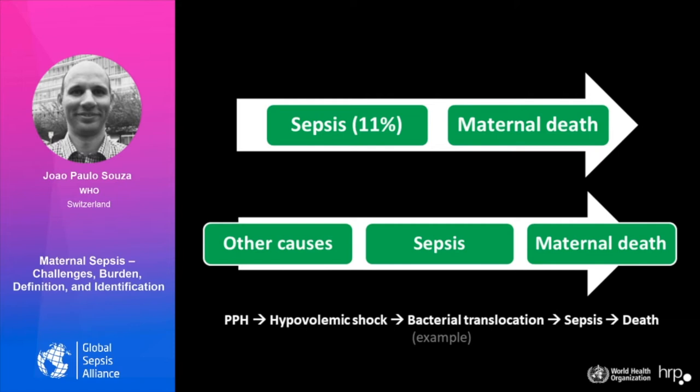For example, a woman develops postpartum hemorrhage, evolves into hypovolemic shock, receives adequate resuscitation, but still develops bacterial translocation, and then days later, sepsis and death. Similarly, a hypertensive disorder can evolve into a complication such as a stroke, then aspirative pneumonia, sepsis, and death. The total burden of sepsis related to pregnancy is estimated to be around 100,000 maternal deaths every year.